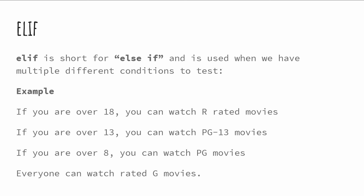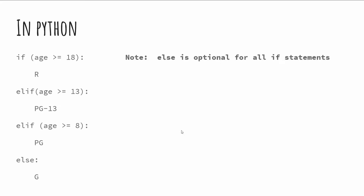So here's our else-if statement. If you are over 18, you can watch an R-rated movie. If you are over 13, you can watch a PG-13 movie. If you're over eight, you can watch a PG movie, and then everybody can watch G-rated movies. This is a kind of if-else-if statement. If I wanted to write this in Python form, here's some pseudocode.